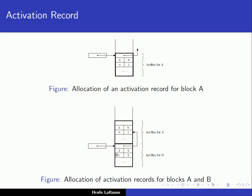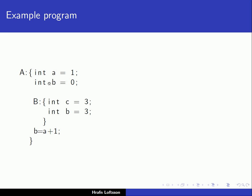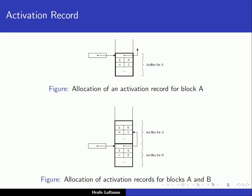The activation record for block B has been pushed onto the stack and it contains variables B and C. Importantly, the activation record for A is still on the stack because block A has not finished execution. Block A starts executing, then the inner block B starts executing, and once B has finished, A is still executing — so A's activation record needs to remain on the stack. Notice that in this example the stack is actually growing downwards, and the activation record for B is the top activation record on the stack.